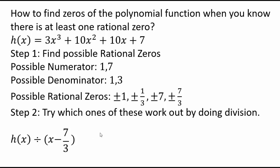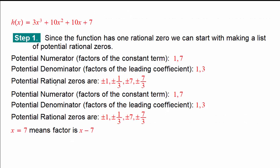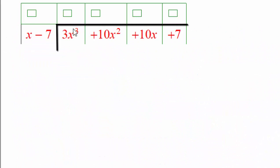Let's do one of the long divisions and see what happens. How do we know that you divide by x minus whatever? If x equals 7 is a zero that works, that means x minus 7 is going to be a factor. We saw that because if you have a factor, the remainder is going to be zero, and so the factor is x minus that number — in this case, 7. So here's x minus 7. We're long dividing it into 3x cubed plus 10x squared plus 10x plus 7, with each term in its own column so you can see what is going on.